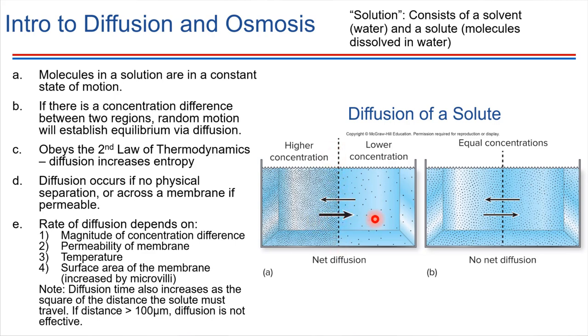So net diffusion would be to the right. And if we make this side even more concentrated, then that rate of diffusion is just going to increase. It'll go even quicker to the right. Permeability of the membrane certainly influences the rate of diffusion as well. So imagine if you poke more holes in this membrane, then that would allow diffusion to happen more quickly.